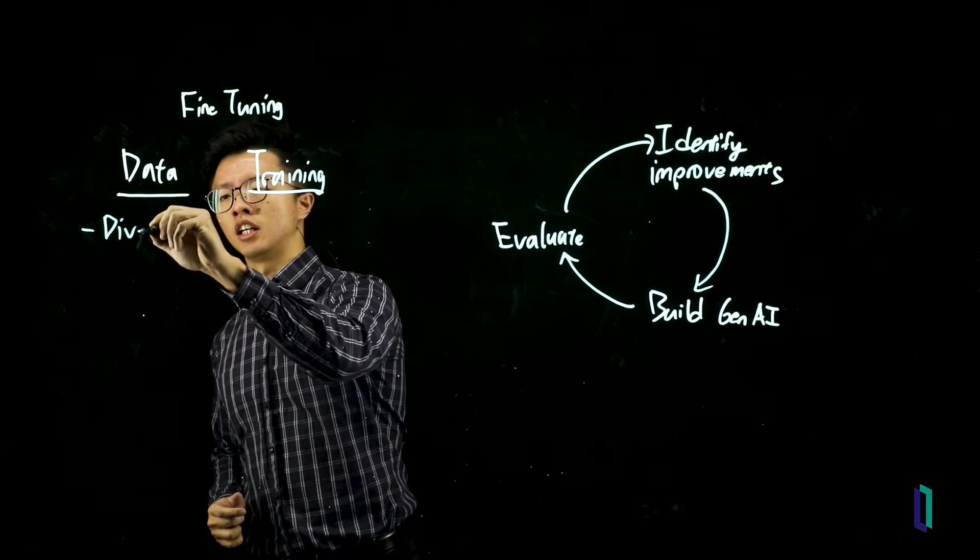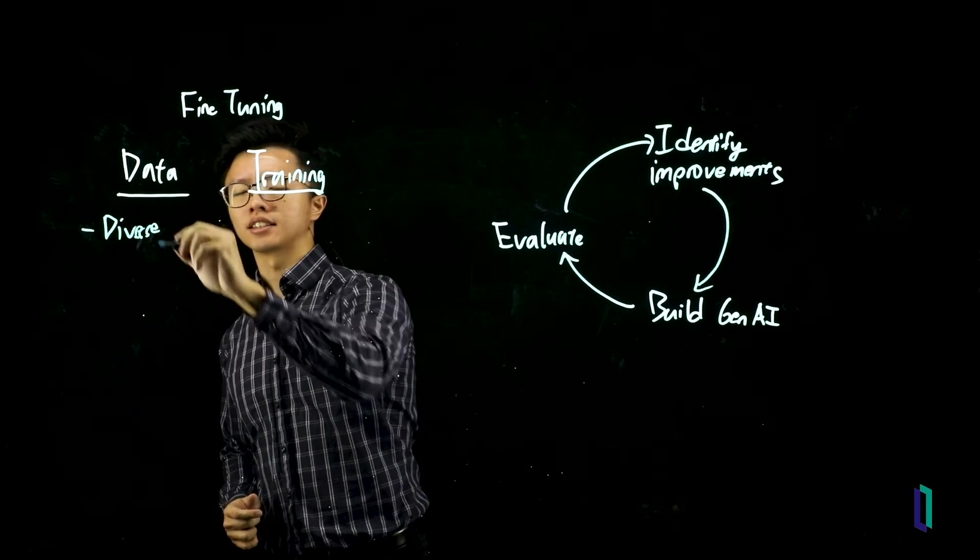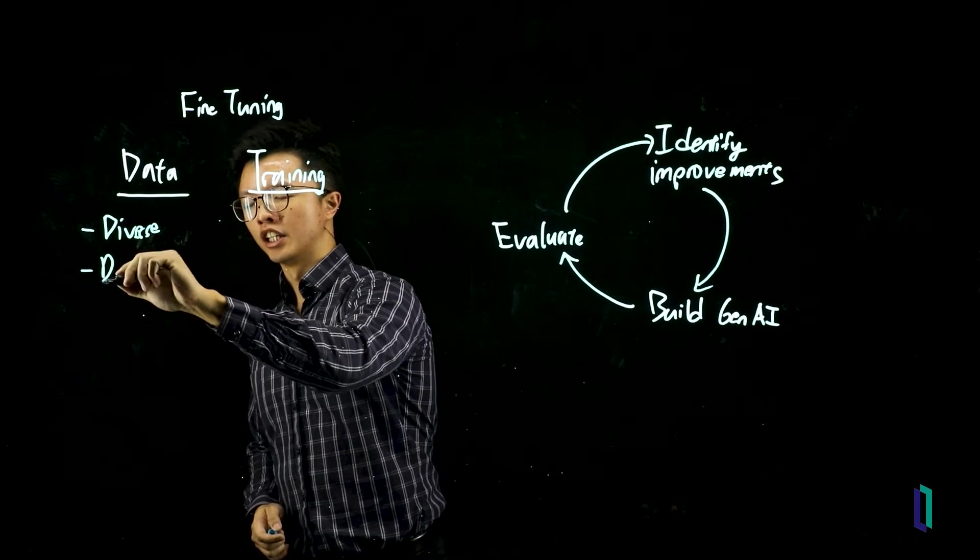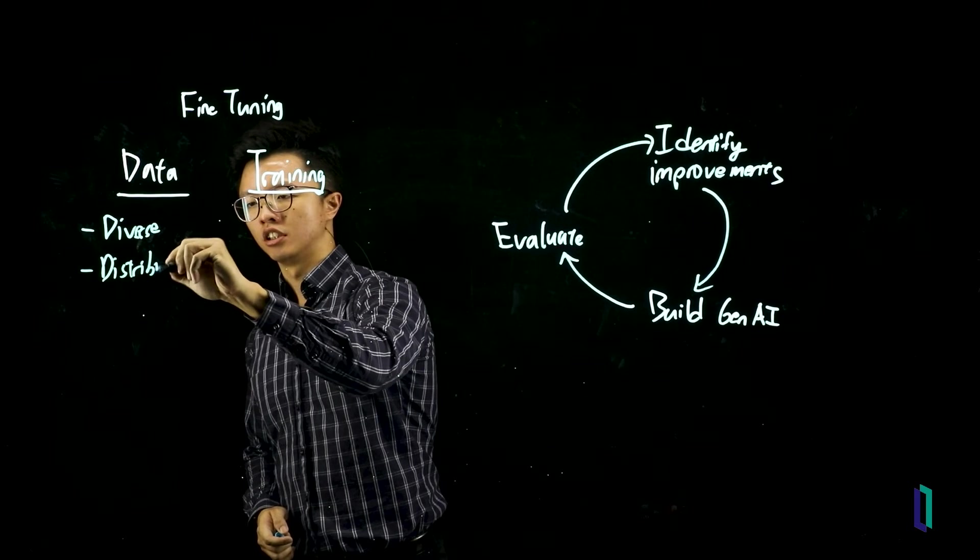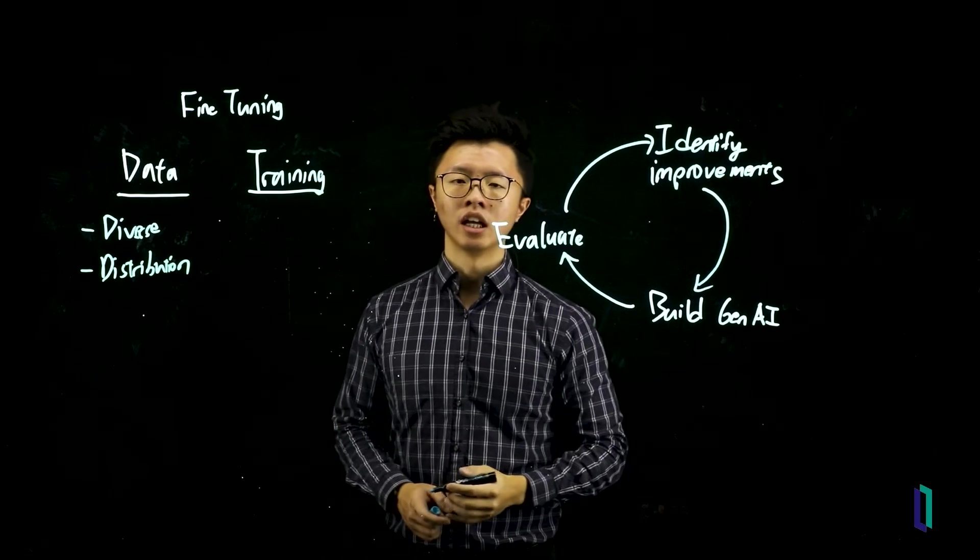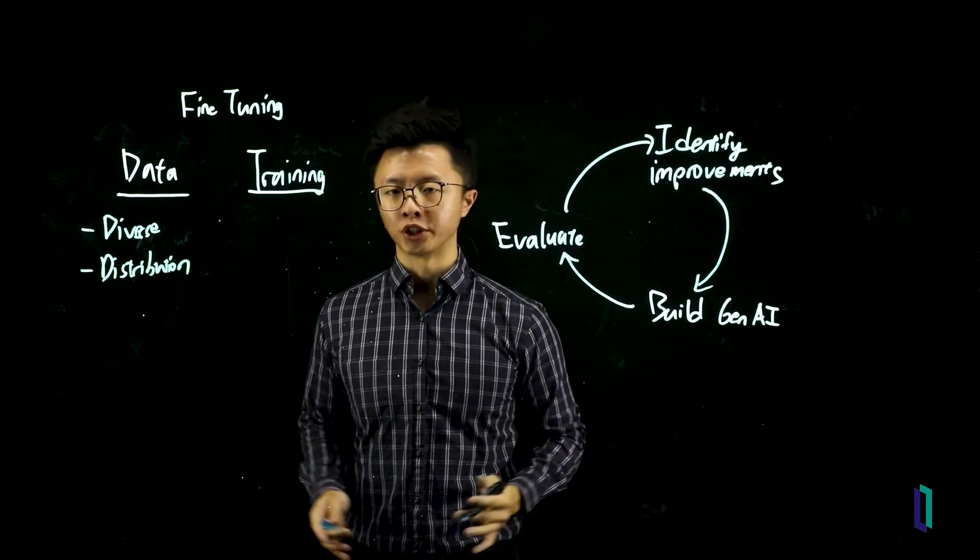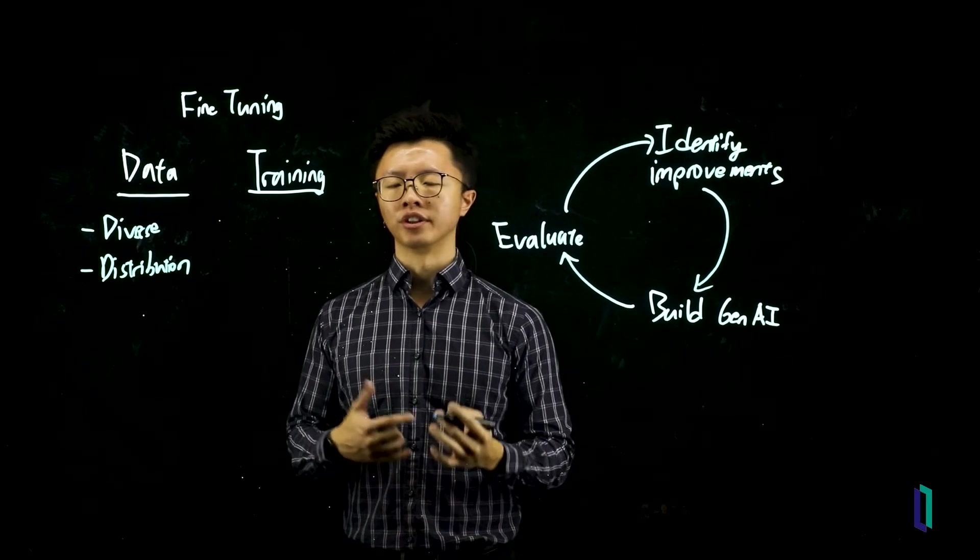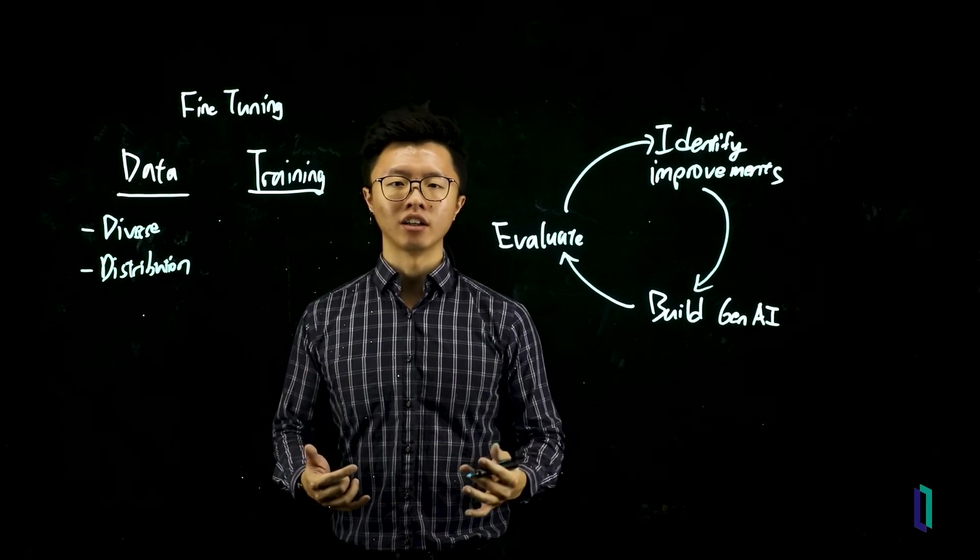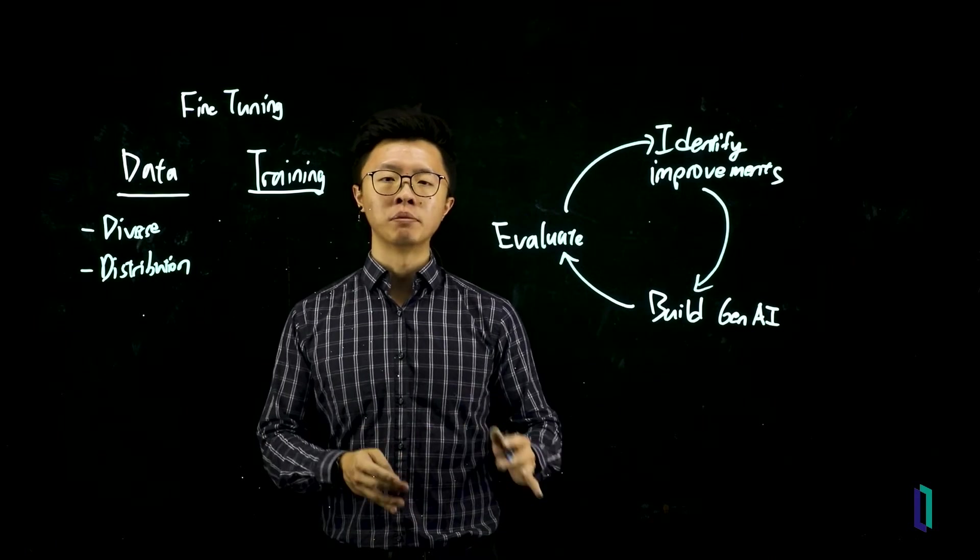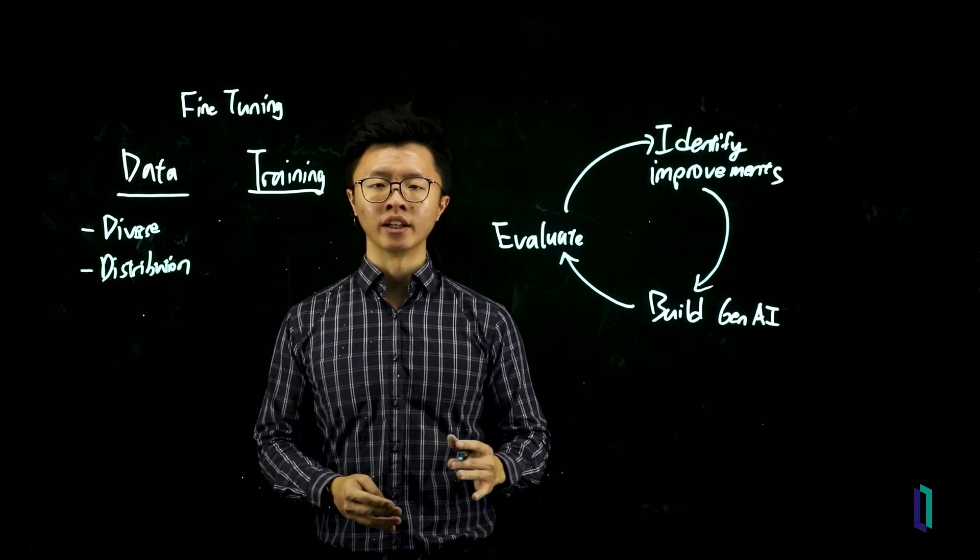First, it should be diverse. Across the set of tasks that you needed to accomplish. And it's important to understand the distribution of your training data. If you do some analysis of your data, you realize that it's extremely skewed. And you're missing data from a few categories. You would expect your model to also do poorly in those categories. And you can go deeper to analyze this whenever you evaluate your model.